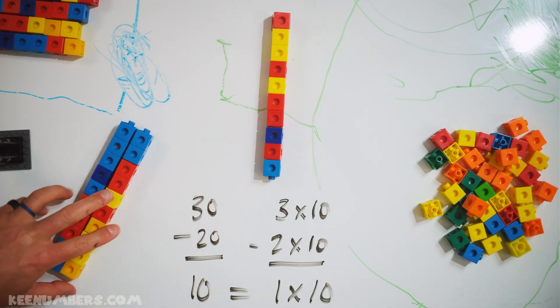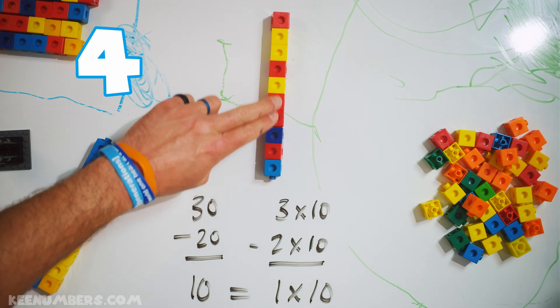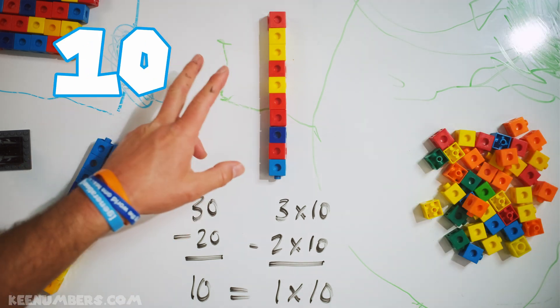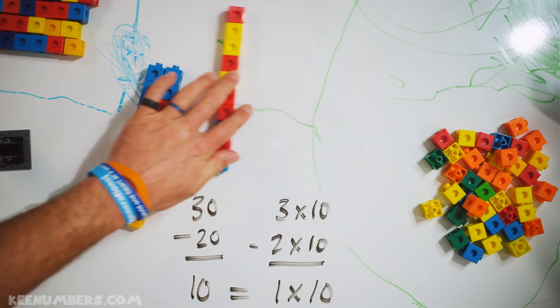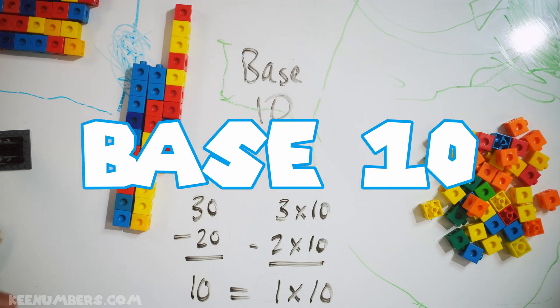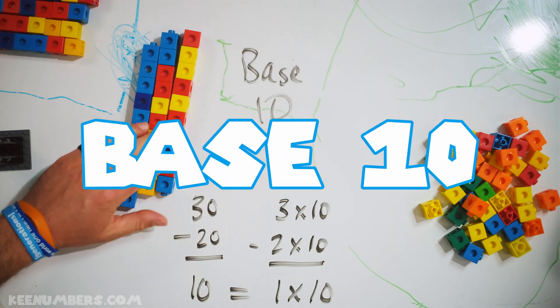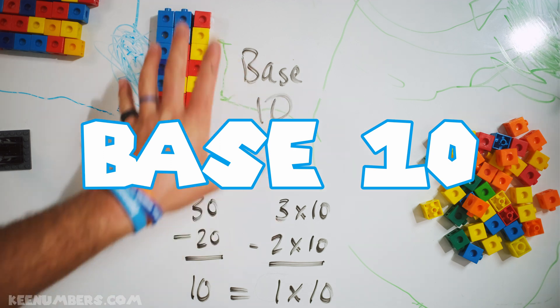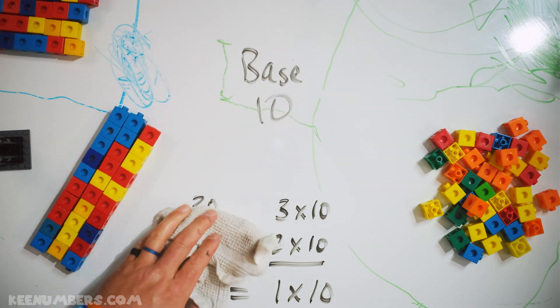We only have one stack of 10 left over. That is so much quicker than going 2, 4, 6, 8, 10. You can do that but when you are dealing with base 10 you get to add and subtract and multiply with 10, 100, 1000 and so on and so forth so easily.